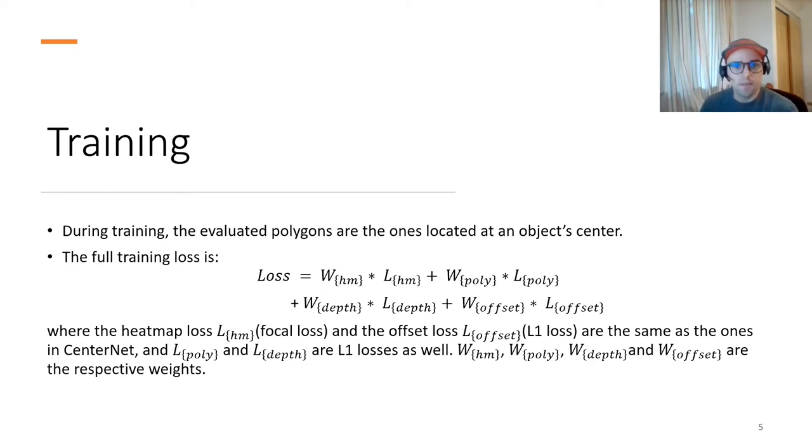So here is an equation of the full training loss. Basically, the heatmap loss is the same as in CenterNet, so it's the focal loss, and all the other losses are L1 losses. And we also have weights for each loss. If you want the implementation details, you're very welcome to check our code on GitHub.